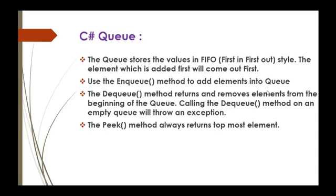To add elements to the Queue, we have a method called Enqueue. To remove elements from the Queue, we use a method called Dequeue. We also have a method called Peek, which always returns the topmost element in the Queue.